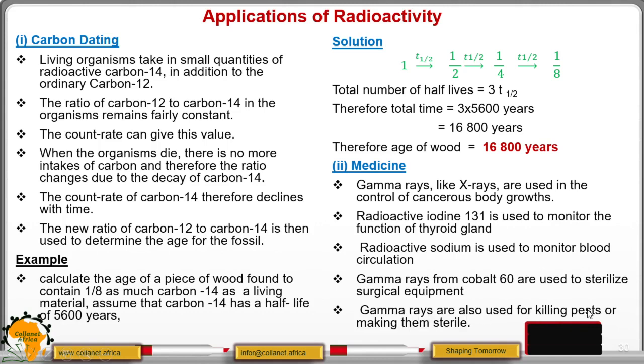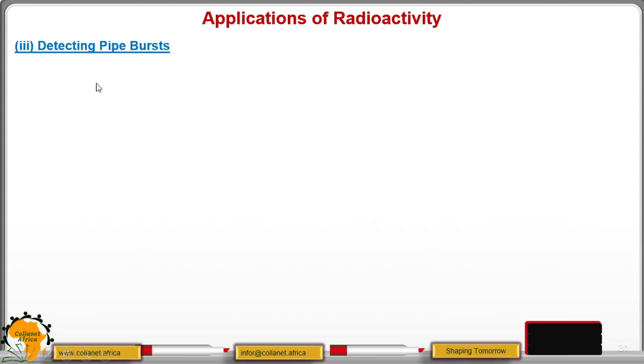Also, gamma rays are used to kill pests and make them sterile. When you kill pests, then you control the spread of diseases. So these are the ways of how radioactivity is applied in medicine. From there, we move to number three, where we are detecting the pipe bursts.